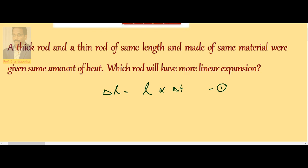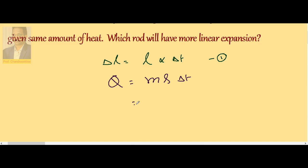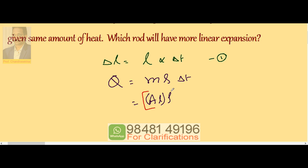Now Q heat supplied equals M S delta T. In the place of mass we can substitute area times length times density. This replaces the mass term.